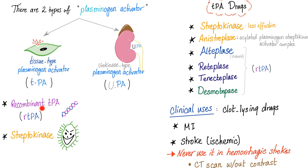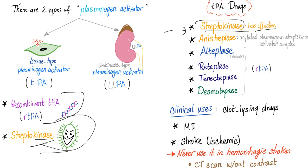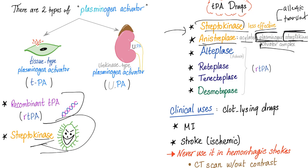We have natural TPA and recombinant TPA. Through recombinant DNA technology, we have streptokinase, which comes from streptococci — it is less effective and can cause allergic reactions and transient hypotension. We also have anistreplase, which is an acylated plasminogen streptokinase activator complex — essentially a modified streptokinase. Alteplase, reteplase, and tenecteplase are all recombinant TPAs.